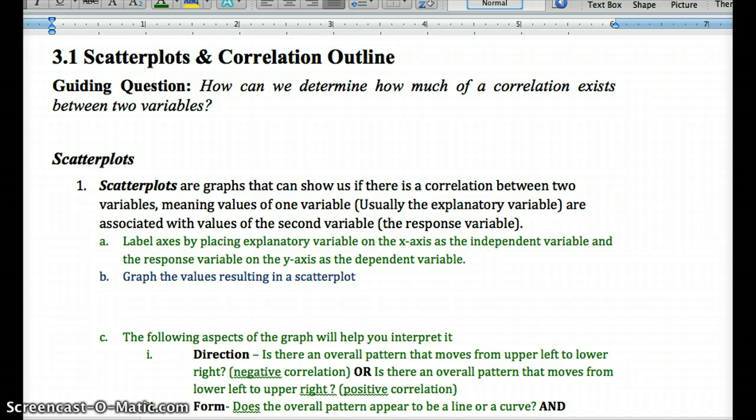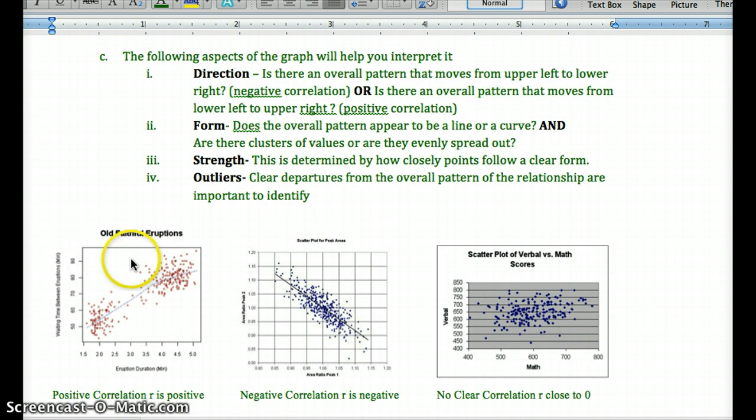Then, from there, we can look to see if we can find a positive correlation or a negative correlation between the two values, like some sort of pattern between the two values corresponding. So let's look at what we have to look at in the scatter plot to interpret it. So here we have three scatter plots, all of different things, and all here because they show different correlations.